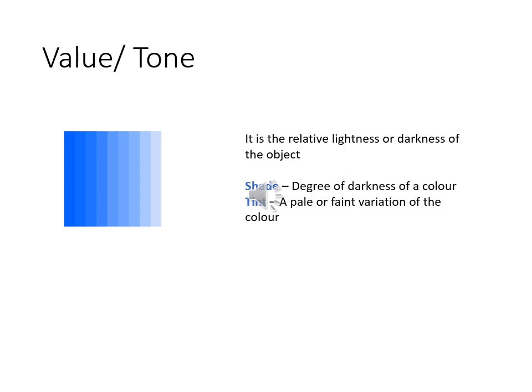The last element of design is value, also referred to as tone. Value is the relative lightness and darkness of an object — it is either a shade or a tint of a color. A shade is a degree of darkness, obtained by adding black to a color, and a tint is the pale or faint variation, obtained by adding white to a color.